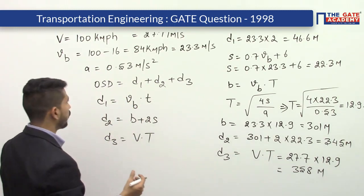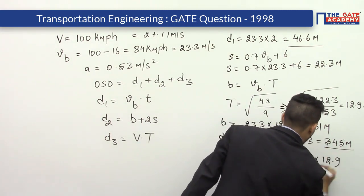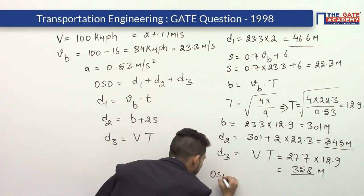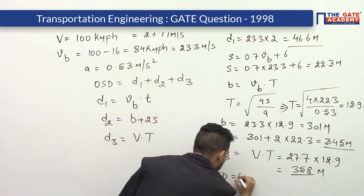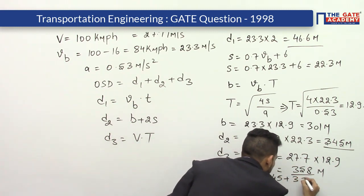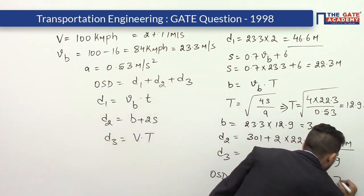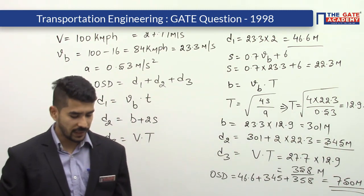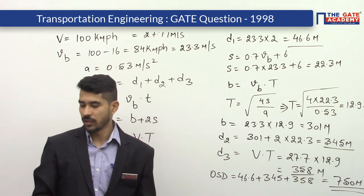Now we have all three values: d1 equals 46.6 meters, d2 equals 345 meters, and d3 equals 358 meters. So OSD equals d1 plus d2 plus d3 equals 46.6 plus 345 plus 358, which comes out to be roughly 750 meters. The overtaking sight distance is 750 meters.